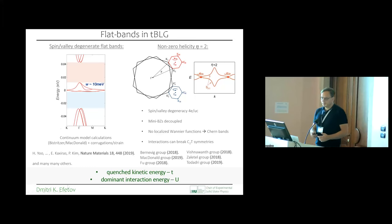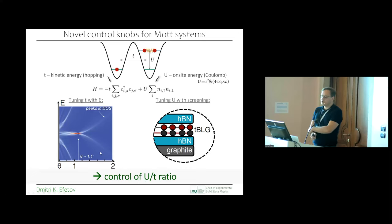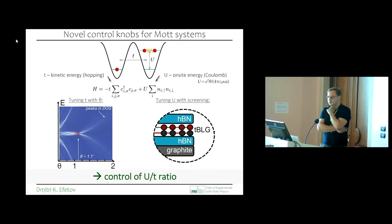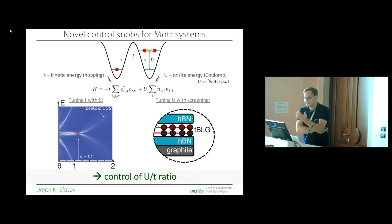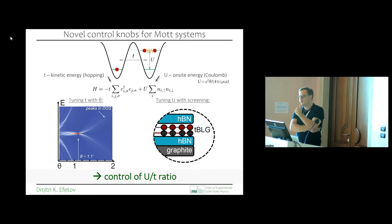Having established this, I want to explain some differences these systems have compared to traditional systems — like cuprates, crystalline systems, or optical lattice systems — in that we actually have novel tuning knobs to study these systems. Looking at the Hubbard model, which can describe electronic transport in a system like that, it's given by just two parameters: T, the hopping parameter between the two lattice sites, and U, the on-site Coulomb energy — the interaction energy for the electrons.